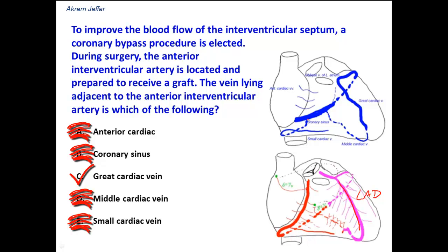The coronary sinus, which is formed by the continuation of the great cardiac vein, will later receive the middle cardiac vein and the small cardiac vein. It is the great cardiac vein on the anterior surface that accompanies the anterior interventricular artery.